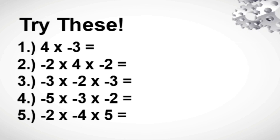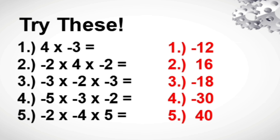Time is up. Now let us check your answers. Always remember to be honest to find out whether you understand our topic for today. For number 1, we have negative 12. Number 2 is positive 16. Number 3 is negative 18. Number 4 is negative 30. And number 5 is positive 40.